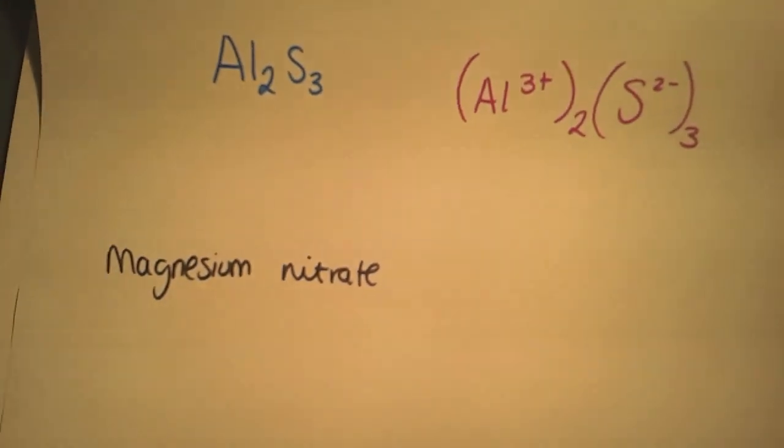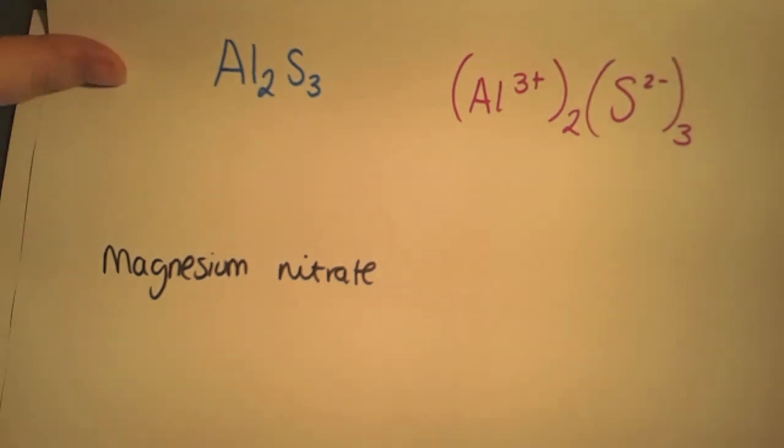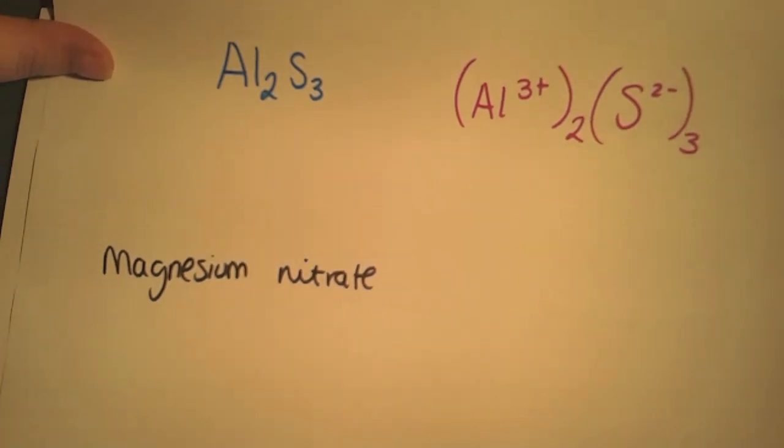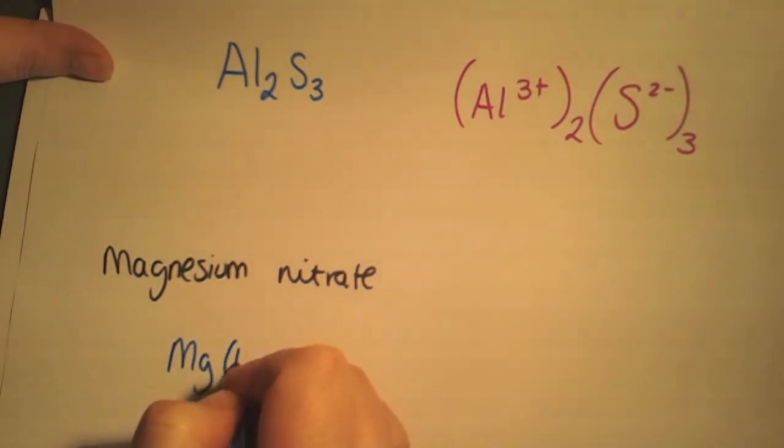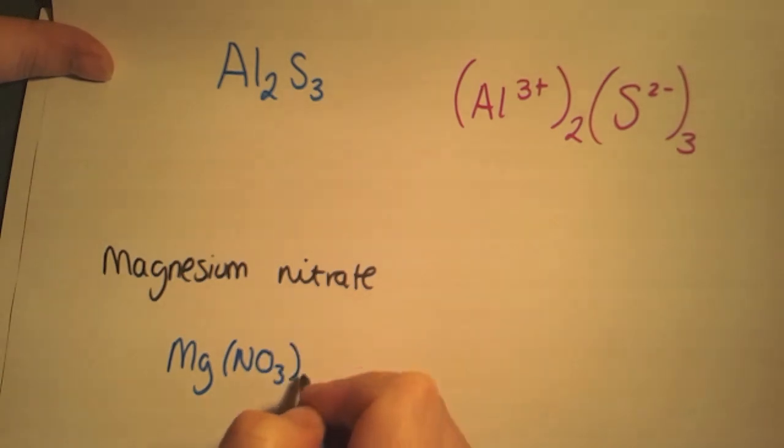Looking now at things that involve group ions, here we have magnesium nitrate. So remember to use the table in your data book to find the formula for the nitrate part. And when you write out the chemical formula you'll find you have Mg(NO3)2.